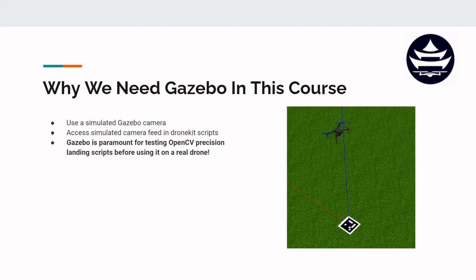So why do we need Gazebo? We know that for our Capstone project — our TacoCopter — precision landing is going to be a very important element of that mission. Gazebo is going to help us test our precision landing scripts. We can actually access that simulated camera feed right in a DroneKit script where we can do some OpenCV computer vision-based control on the drone. Basically, Gazebo is paramount for testing our OpenCV precision landing scripts before even using them on a real drone.